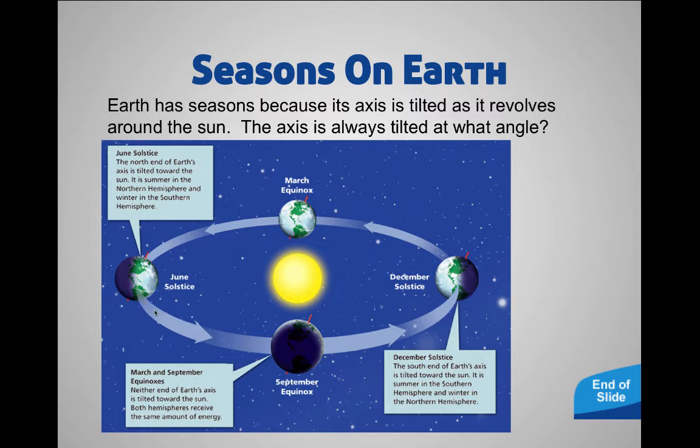Then as the year progresses, about three months later we get to September and the September equinox. At this point the earth is not tilted towards or away from the Sun — it's sort of at an angle going sideways. Both the northern and southern hemispheres are getting the same amount of sunlight, so we get equal parts day and night: twelve hours of day and twelve hours of night — hence the name equinox.